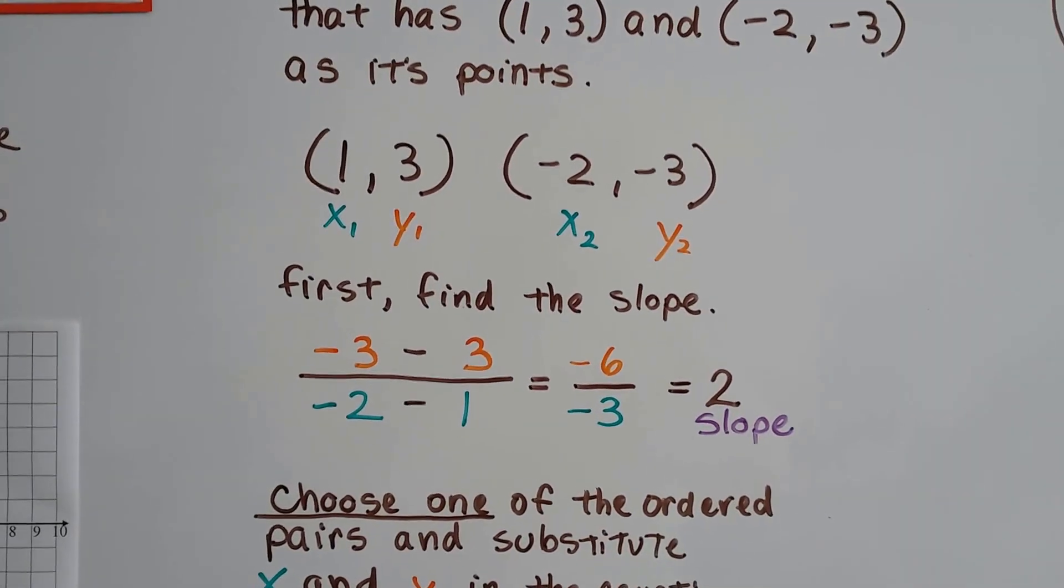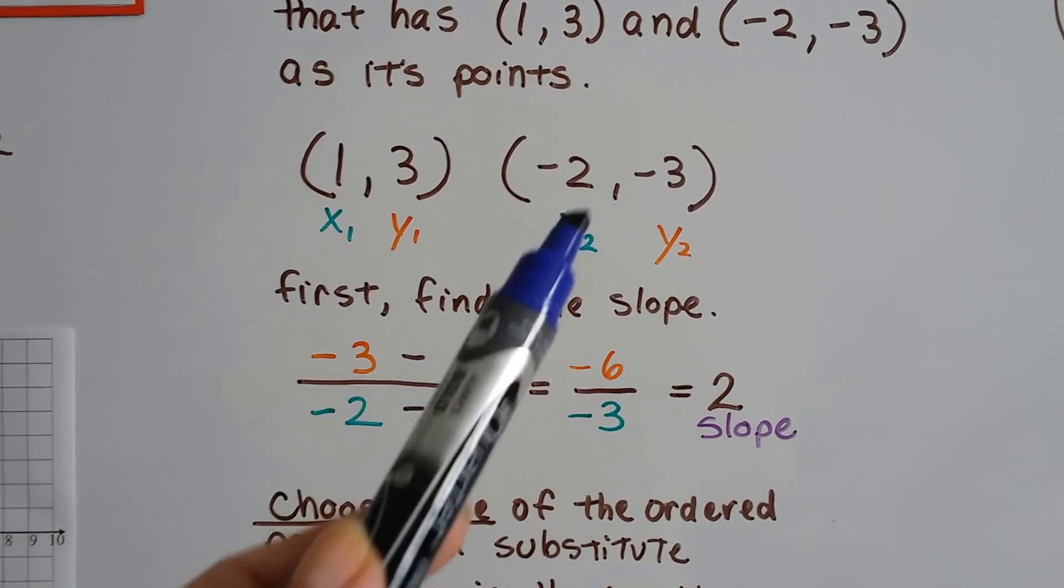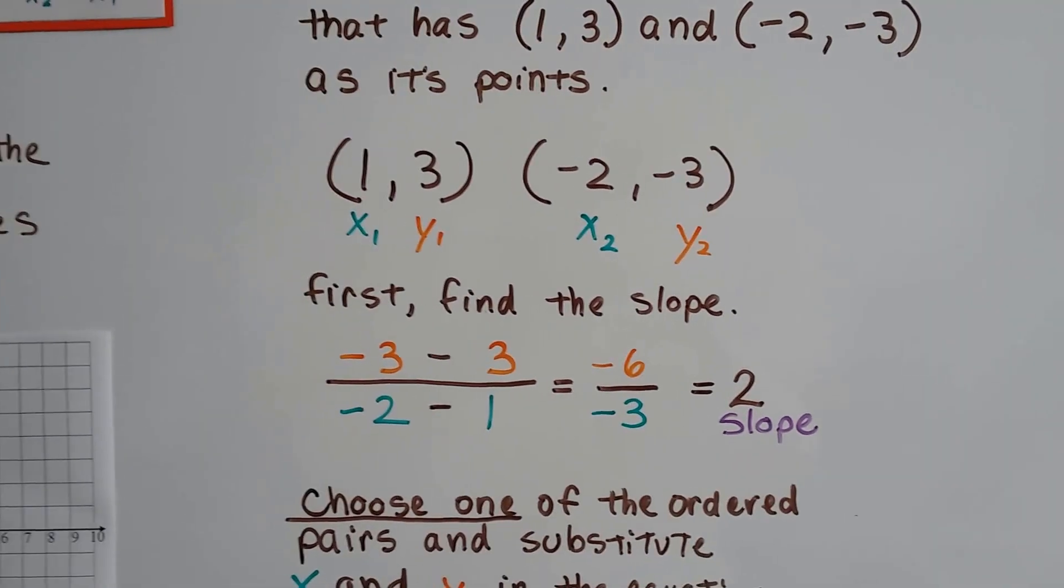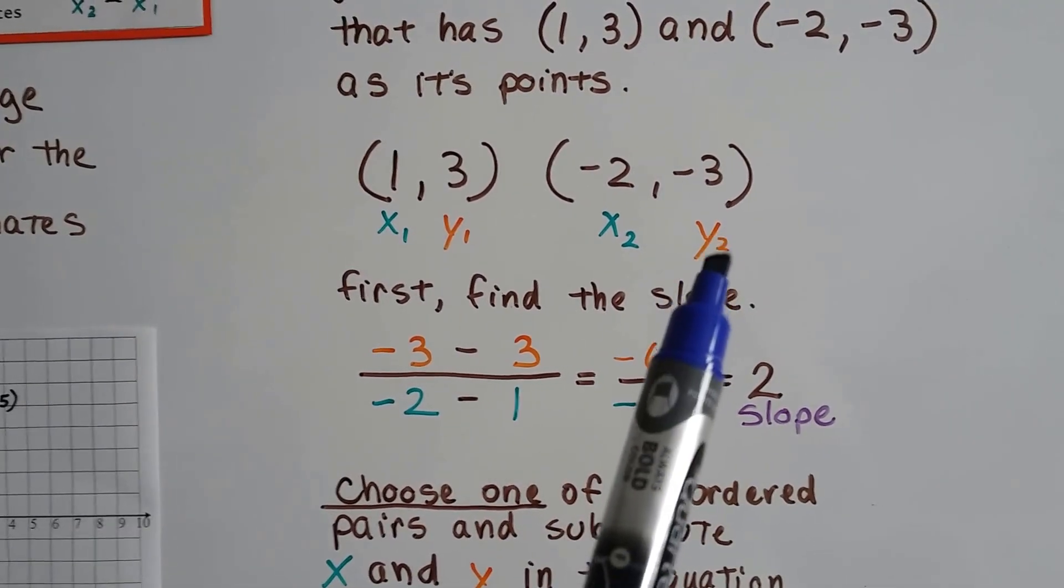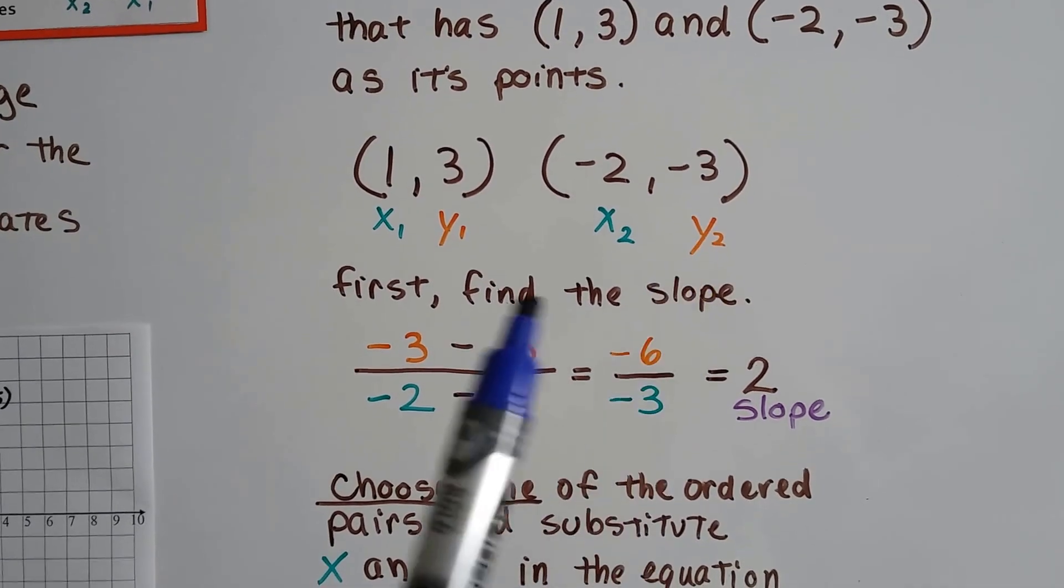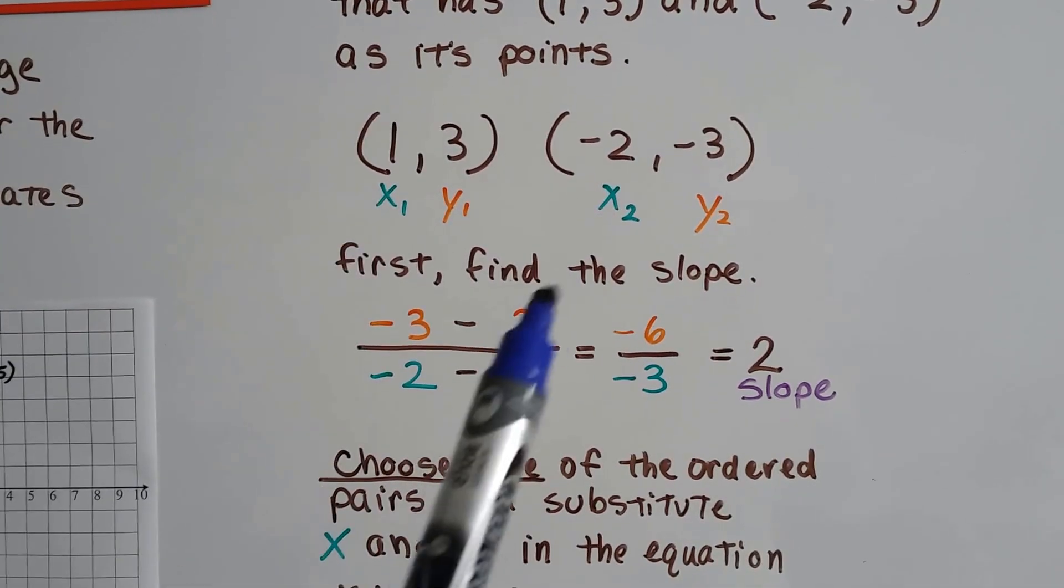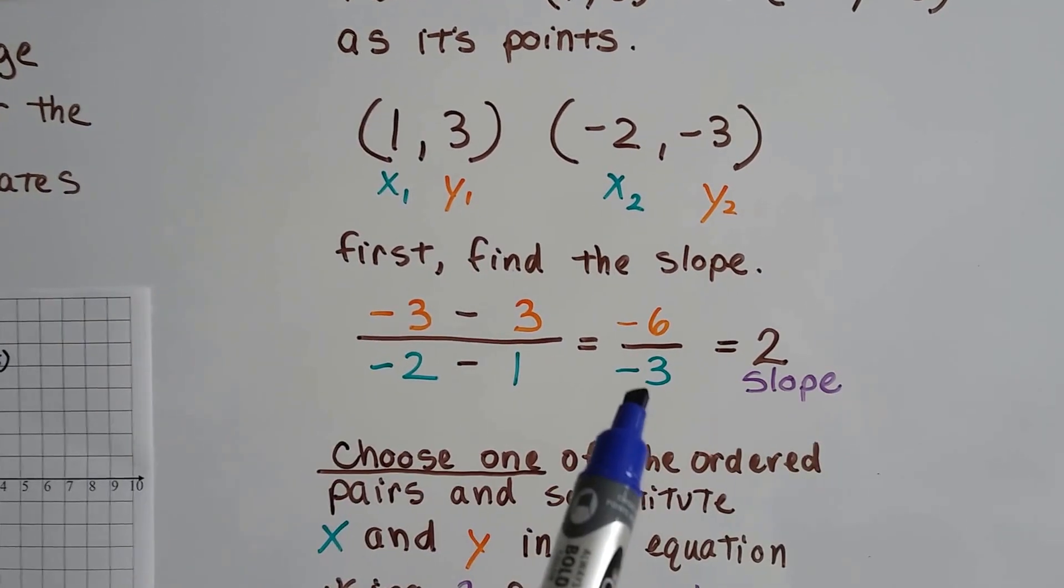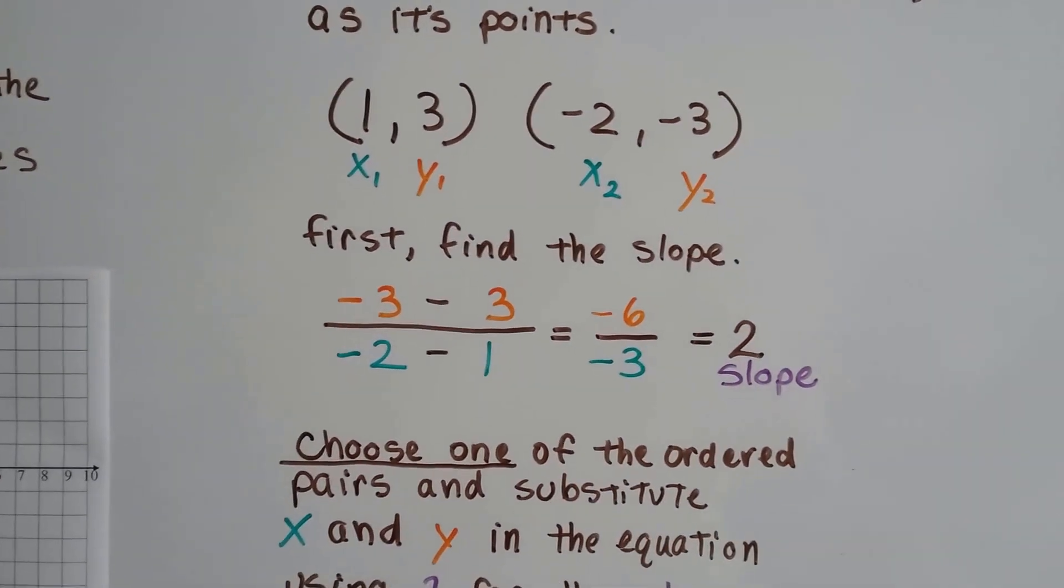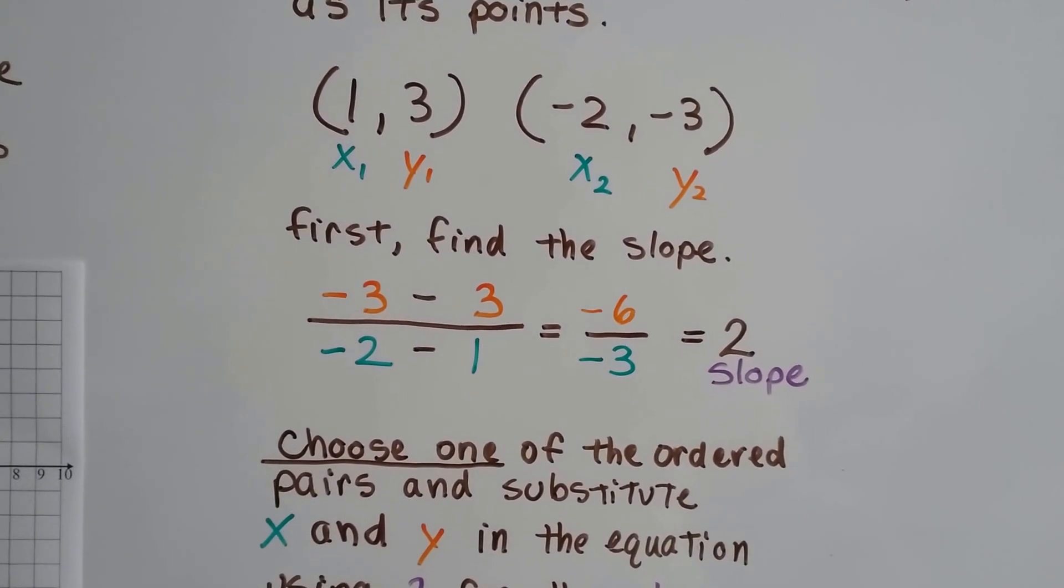So first we're going to find the slope. So we put the x1, x2, y1, y2, and we subtract and do negative 3 take away 3. And now we have to do x2 take away x1. That's negative 2 take away 1. That gives us a negative 3. Negative 6 over negative 3 is 2 for its slope.